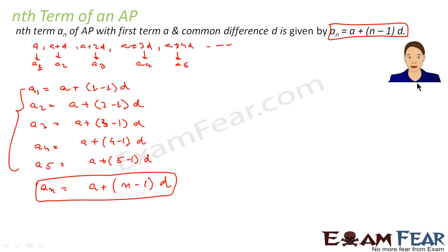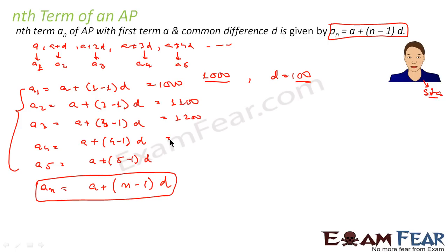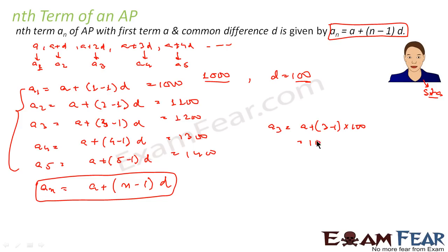Practically, let me give you an example. Suppose we have a lady named Sita. Sita gets a salary of 1000 rupees per month and every month she gets an increment of 100 rupees. Such a scenario is an AP. So her salary will be: after the first year 1000, second year 1100, then 1200, then 1300, then 1400. Now if I want to find her salary in the third year: a3 = a + (n-1)d = 1000 + (3-1) × 100 = 1000 + 200 = 1200.